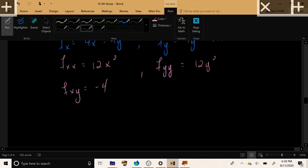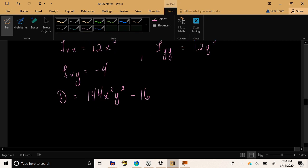So that means that our determinant is going to be the product of the two, not mixed partials, 12 times 12, x squared, y squared. And then we're going to subtract the square of negative 4. So subtract 16.